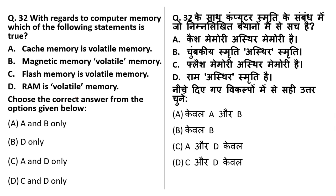With regard to computer memory: cache memory is volatile memory — yes, true. Magnetic memory like HDD is non-volatile. Flash memory like a pen drive is non-volatile. RAM is volatile — this is the most basic example of volatile memory. Volatile memory means if you turn off the power, whatever is in the RAM goes away. So A and D are the right answers.